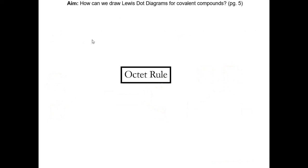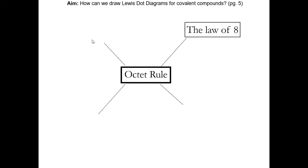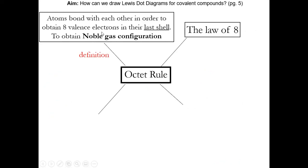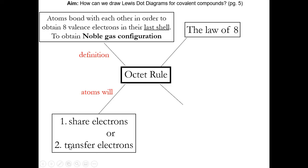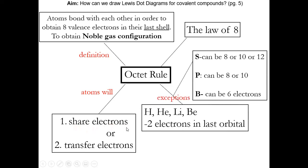Let's review the octet rule. The octet rule is when atoms bond to achieve the noble gas configuration to obtain 8 valence electrons in their last shell. We already discussed ionic bonding where they transfer electrons; now we're discussing covalent bonding where electrons are shared. We still have to follow the exceptions: sulfur can be 8, 10, or 12; phosphorus can be 8 or 10; boron can be 6.